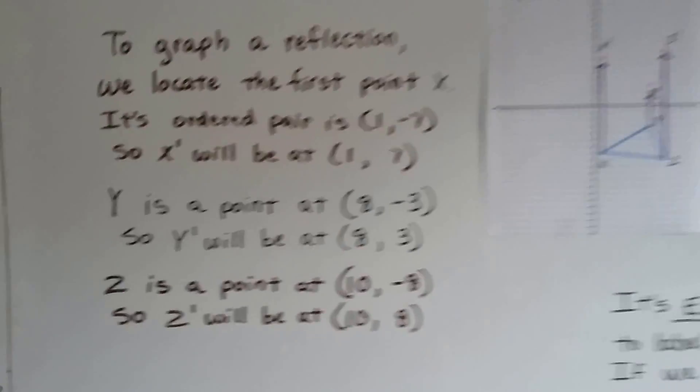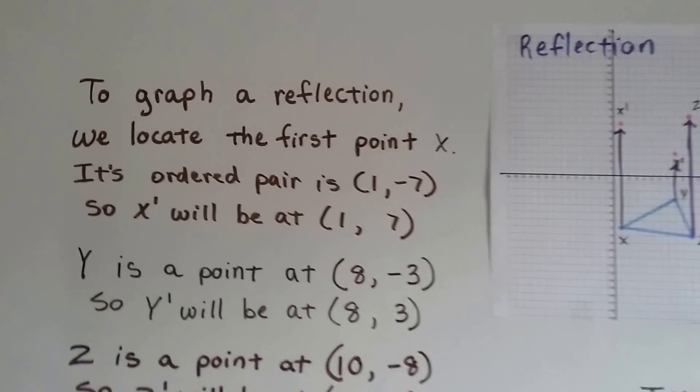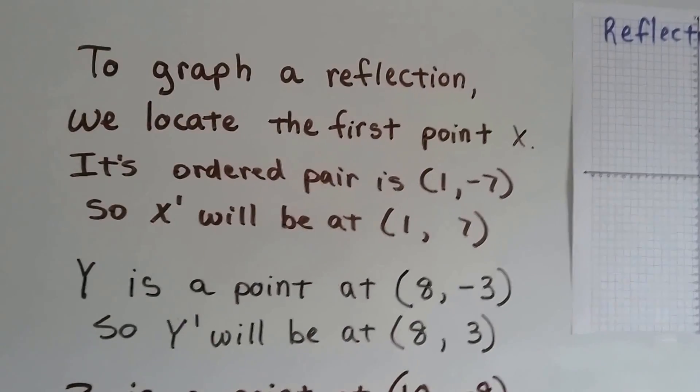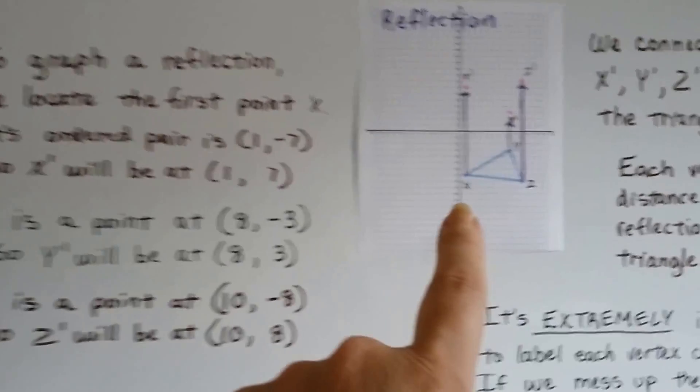So we've got our blue triangle here on our grid, and we want to graph a reflection of that blue triangle. So the first thing we do is locate the first point x, and that's right here.